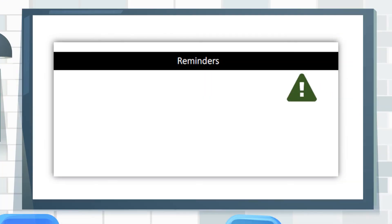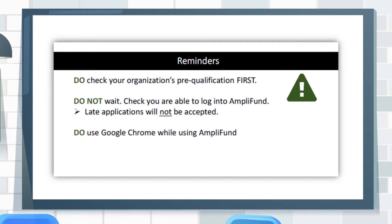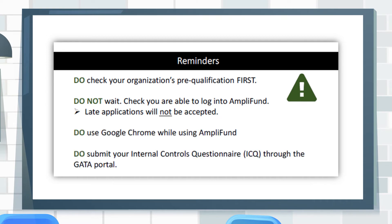A few reminders. Check your organization's pre-qualification status — are you in good standing? It is recommended to use Google Chrome while using Amplifund. You will also want to make sure that you submit your internal control questionnaire through the GATA grantee portal.